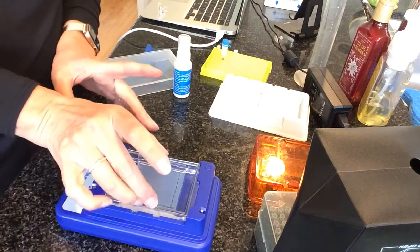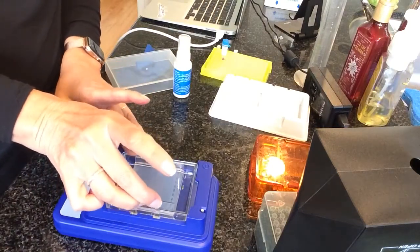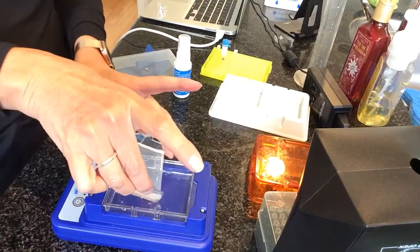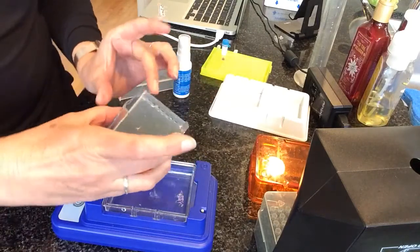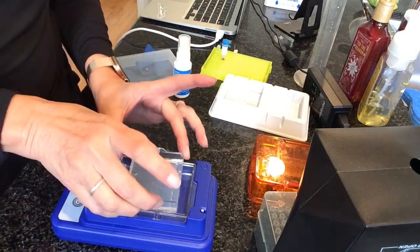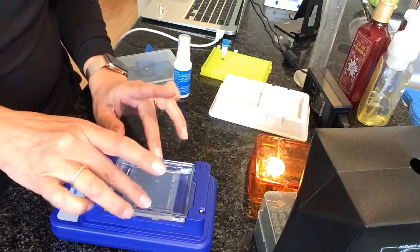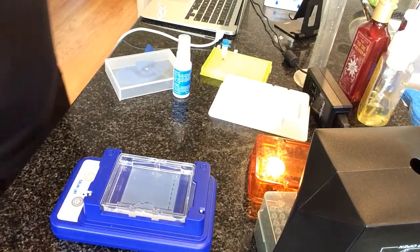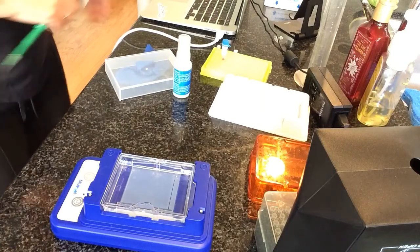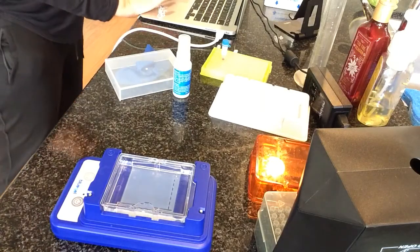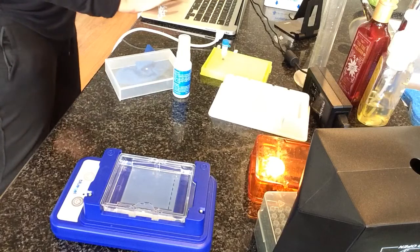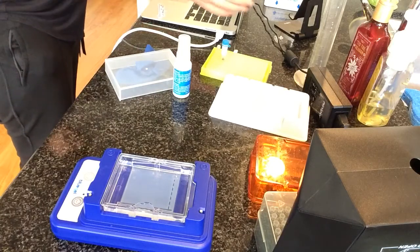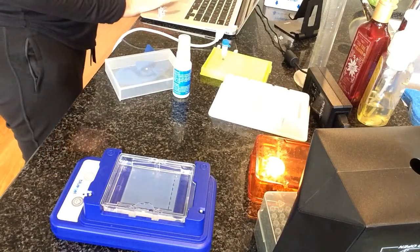You can see, pull the gel out a little bit, you can see the wells and they'll be submerged when you have the gel under the buffer. The trick is going to be to load 12 microliters into the gel. I'm going to make sure that they tell you 12.